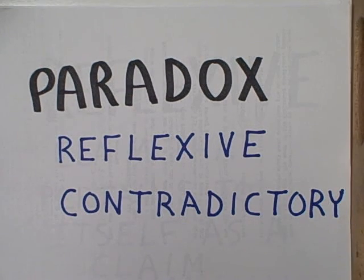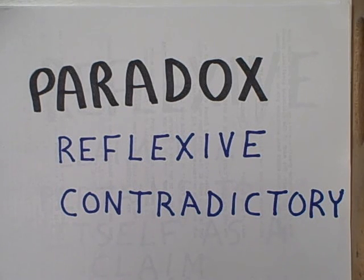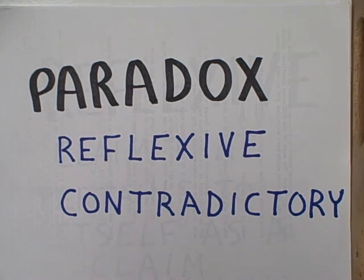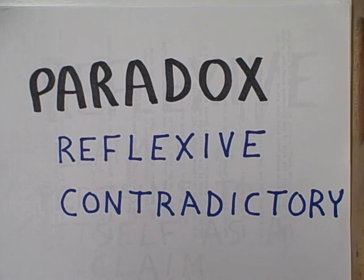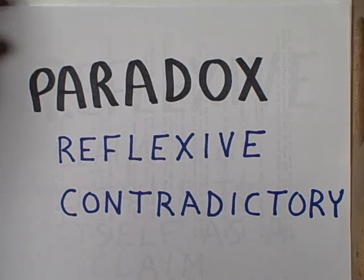This is the Headless Professor talking about paradoxes. A paradoxical claim is one that meets two criteria: first, it must be reflexive, and secondly, it must be contradictory. If a claim fails to meet both of these two criteria, it cannot be termed a paradox.